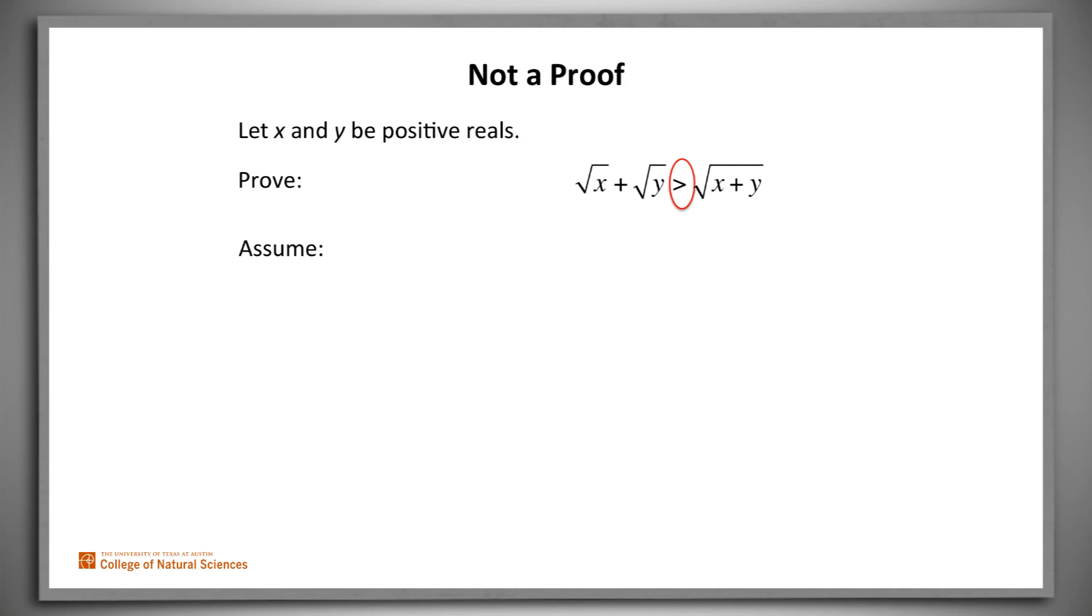By the way, let's look at a non-proof of the same claim. Sometimes people think, well, why to prove some claim P do we have to bother assuming not P and deriving a contradiction? Why can't we just assume P and derive something true?